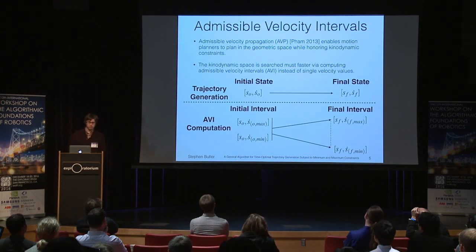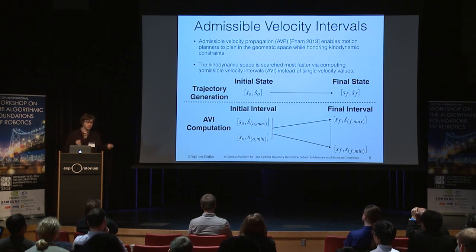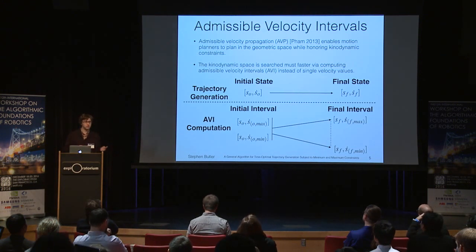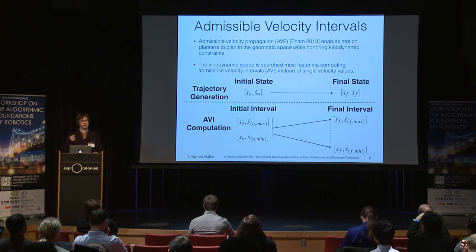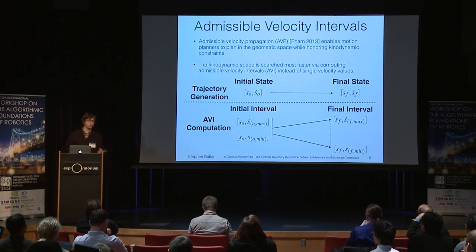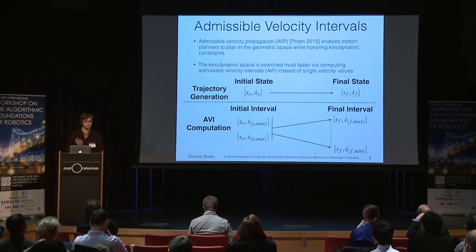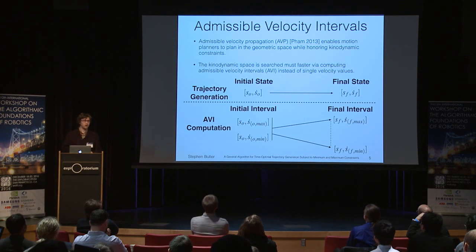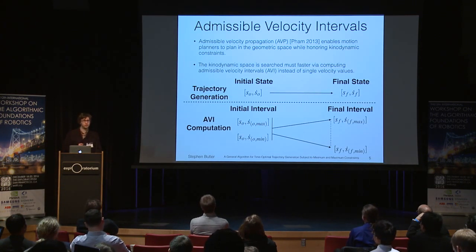Additionally, we may want to compute admissible velocity intervals. We have some initial state and initial velocity, and when generating a trajectory, we'd also have some desired final velocity at the end of the path. However, we may also want to compute the admissible velocity intervals — I say admissible because these intervals must respect the dynamics. In this case, we'd like to compute over some minimum and maximum initial range at the start, and globally compute the entire range of velocities achievable at the end of the trajectory.